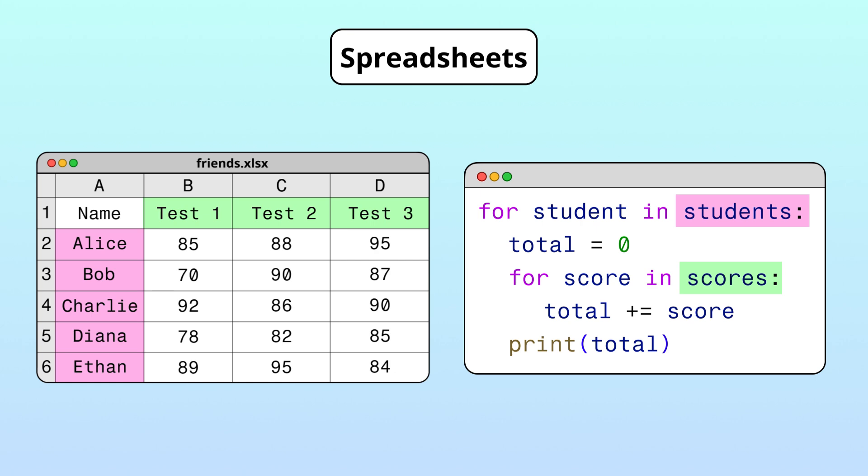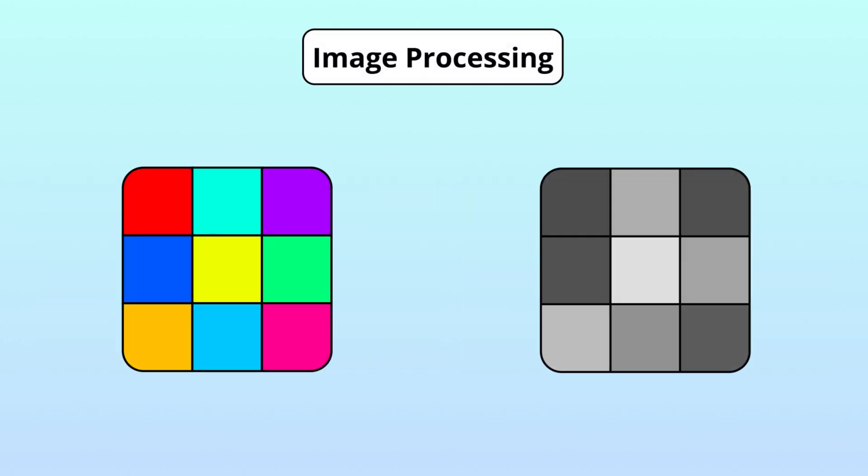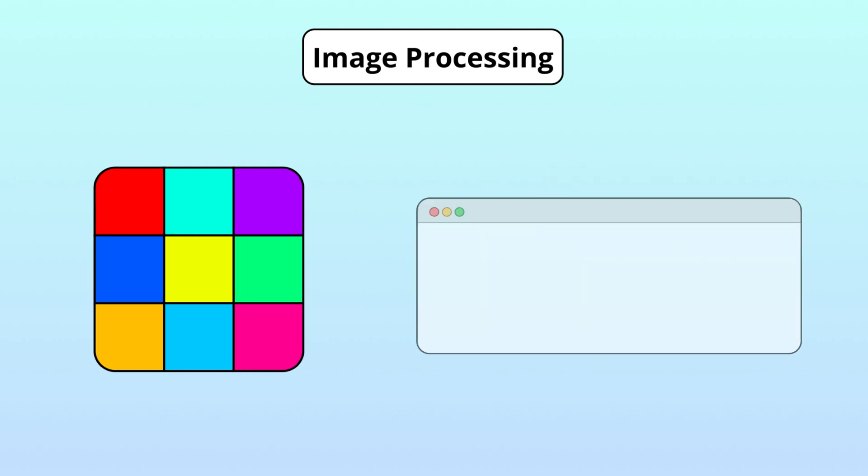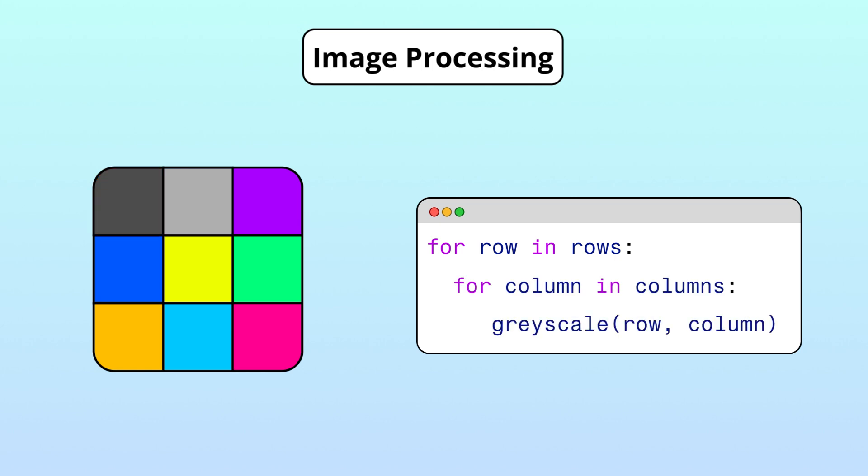Or, you might want to convert a color image to grayscale, pixel by pixel, using a nested loop. In this case, you'd use the outer loop to iterate through each row of pixels, and an inner loop to iterate through each pixel in the row, applying the grayscale operation to the pixel at the current row and column position.